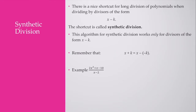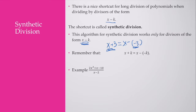Synthetic division, as you can see from an example, is quite faster than polynomial long division when dividing by something of the form x minus k. One thing to remember: if given a divisor of x plus 3, we need to rewrite this as x minus negative 3. So in this case, our k would be negative 3.